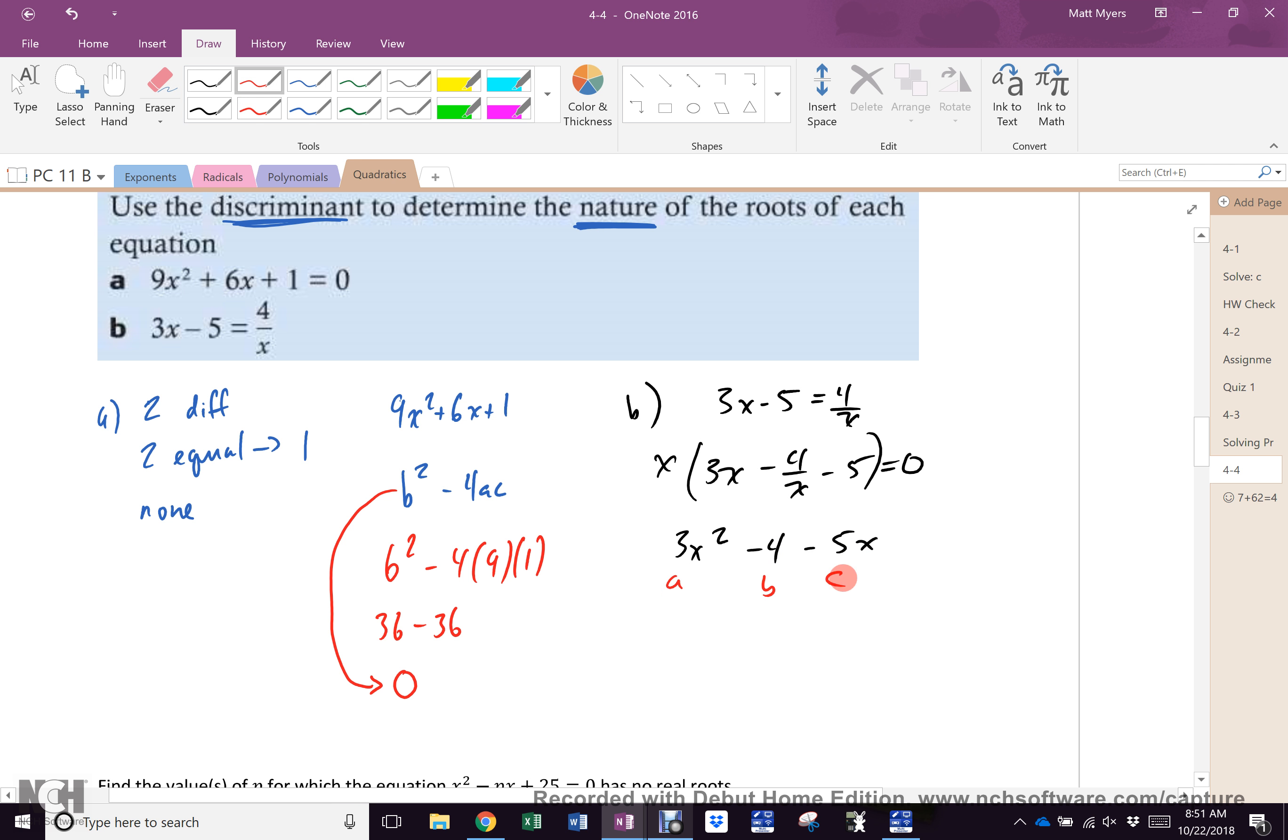So, the fraction already bothers me. How do I get rid of it? Multiply everything by x. And what do I get? 3x² - 4 - 5x. Can I use that for abc yet? Right now, I can use that. So, that would be a, that would be b, and that would be c. I got to move so it's in the right order, correct? Do I actually need to write it in the right order if I know what I am doing?